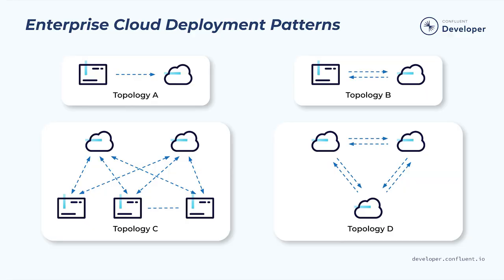Before we delve into the details of cloud networking options, it will help to go over some of the topologies that are seen as enterprises expand into the cloud. Your organization may have a topology similar to one of these. Topology A can be construed as a one-time migration or steady-state condition, where data from on-premises is continuously sent to the cloud. With topology B, data is sent in both directions between on-premises and cloud deployments. With topology C, we capture a scenario where data centers cater to local markets, and the cloud installations are used to aggregate the data either for global views or global features.